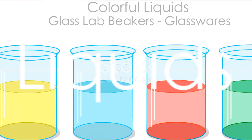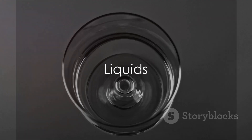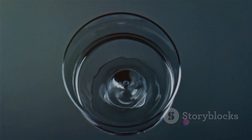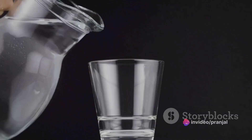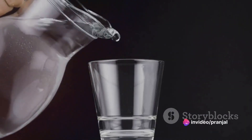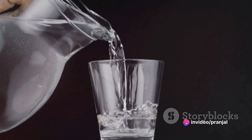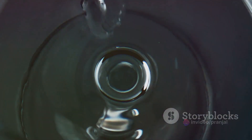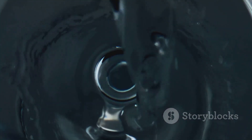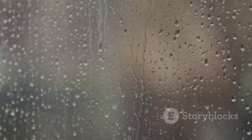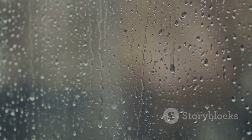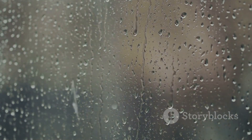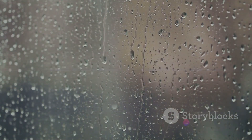Now imagine a liquid like water. Liquids have a definite volume but not a definite shape — they take the shape of whatever container they're in. The particles in a liquid are not as tightly packed as in a solid; they can move past one another, which allows liquids to flow. This is why you can pour a cup of water or why raindrops fall from the sky.